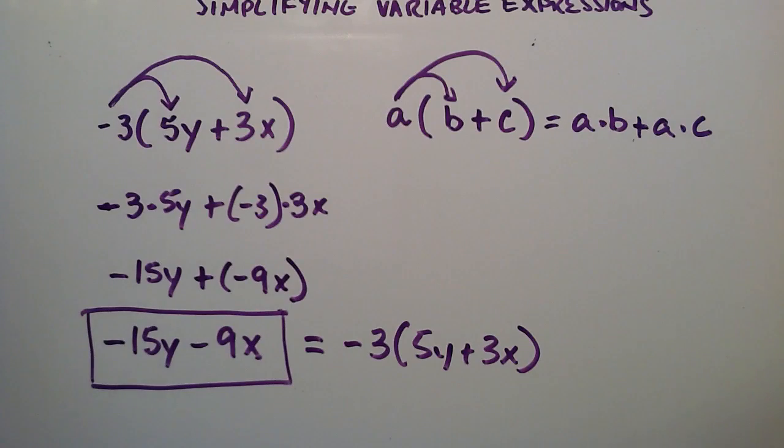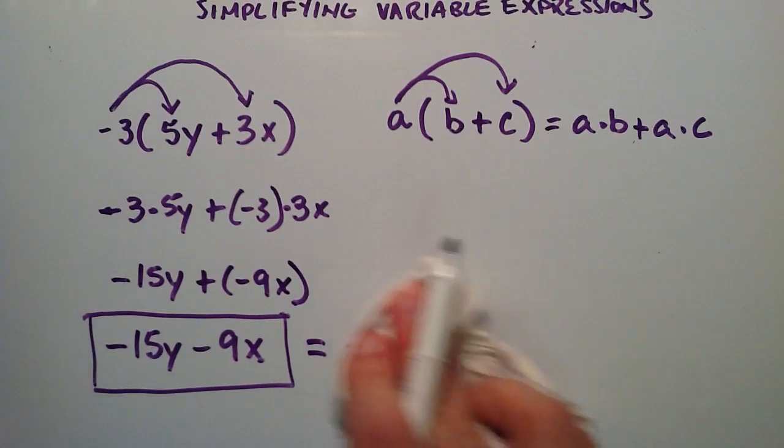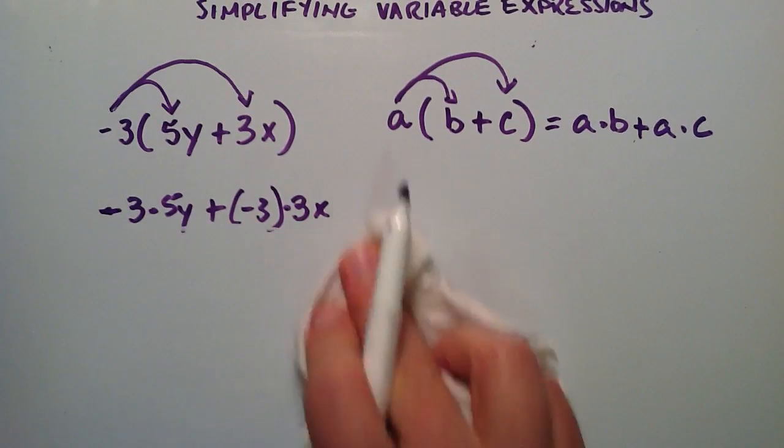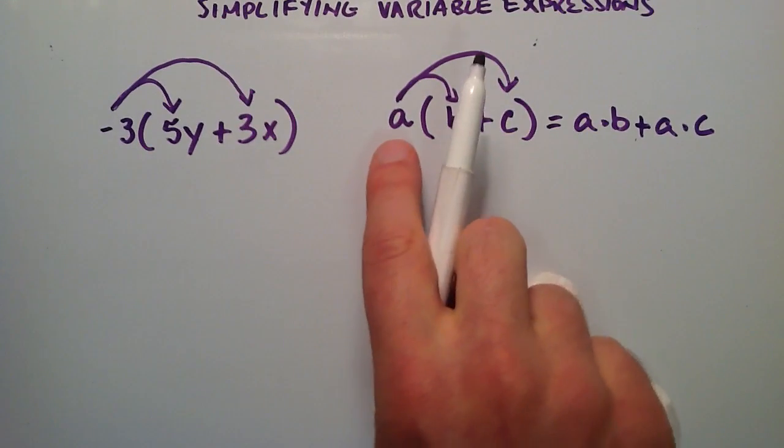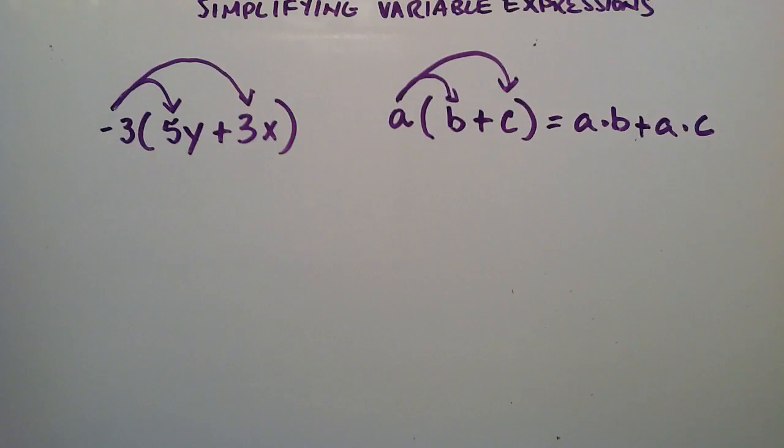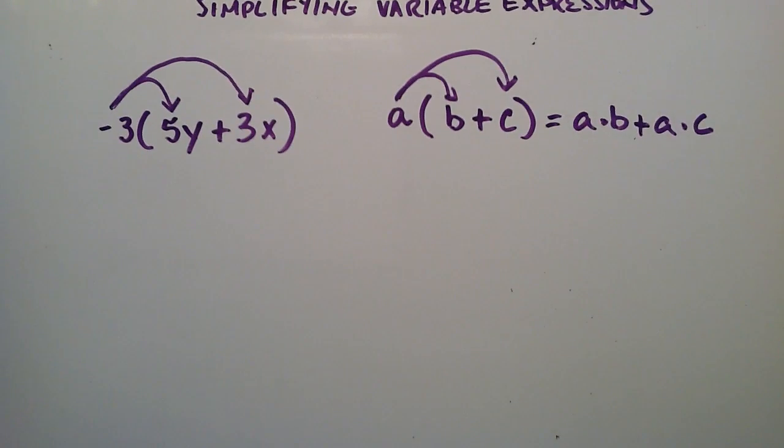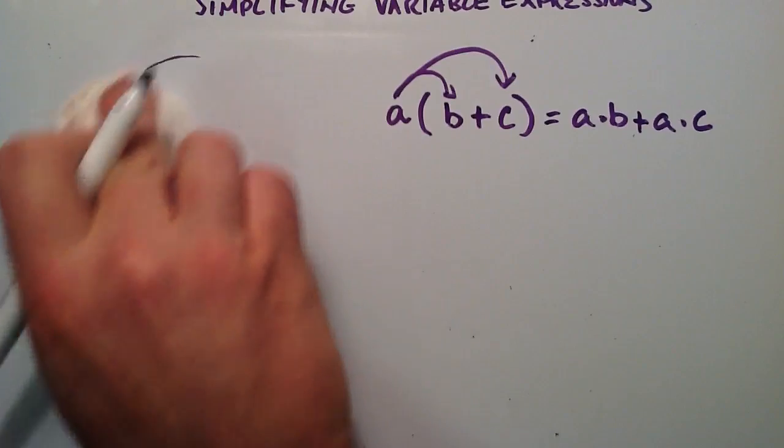I'm going to go ahead and do one more example right now. And so we're just going to basically extend the distributive property now. So up here I say that we can distribute A into two different terms. But it turns out with the distributive property that we can actually distribute A into as many terms as we need,